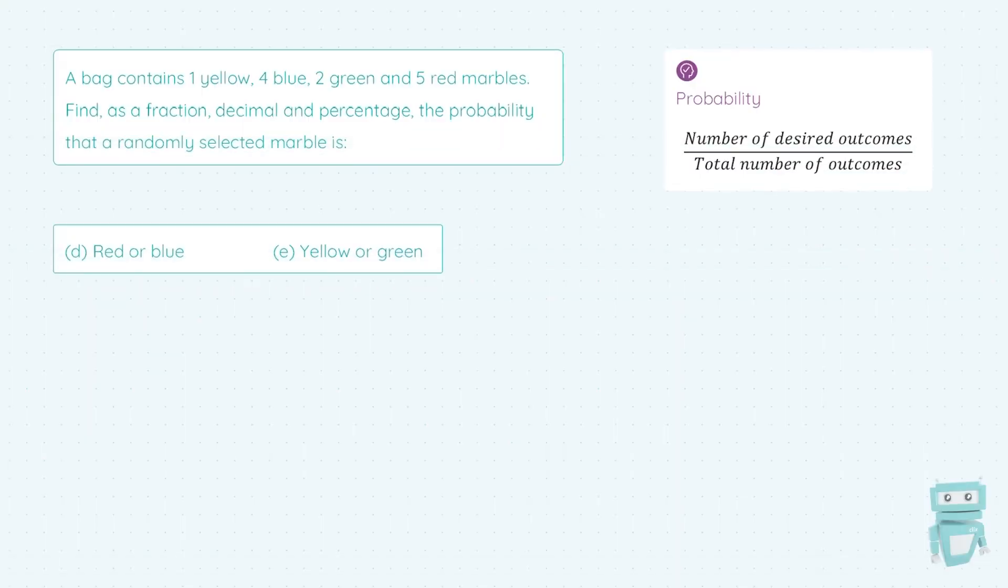Let's keep going with this example. So part D says find the probability that a randomly selected marble is red or blue. Now, all I'm going to do here is I'm going to note that there's 5 red and 4 blue. So that gives a total of 9 possibilities here for the red or the blue. And then I put that out of my total of 12. Simplify the fraction to 3 quarters. Change that as a decimal in the calculator to 0.75. And times it by 100 to get 75%.